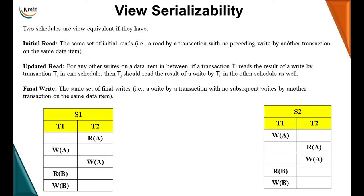The first condition, initial read, says the same set of initial reads must hold — that is, a read by a transaction with no preceding write by another transaction on the same data item. The order should be the same. So schedule S1 is view equivalent to S2 provided the order of initial reads of data object A and data object B remains the same. In schedule S1, data object A is initially read by transaction T2.